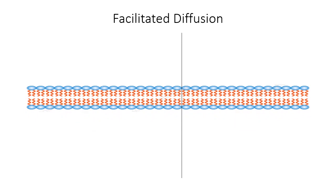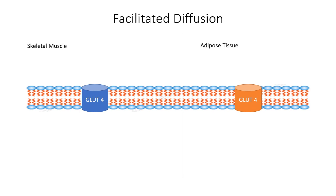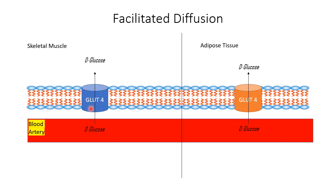An example of facilitated diffusion is the GLUT4 channel — glucose transporter 4 — found in skeletal muscle and adipose tissue. Glucose transported in the blood needs to enter skeletal muscles to support contractions and daily movement. This glucose crosses into the skeletal muscle and adipose tissue via facilitated diffusion through the GLUT4 channel, and it does not require energy.